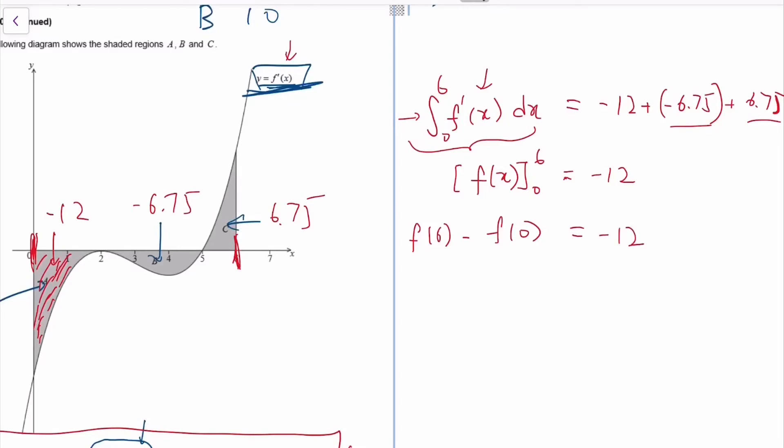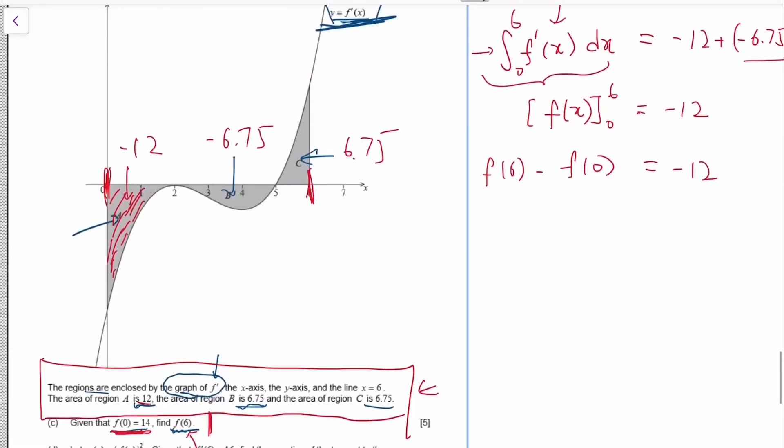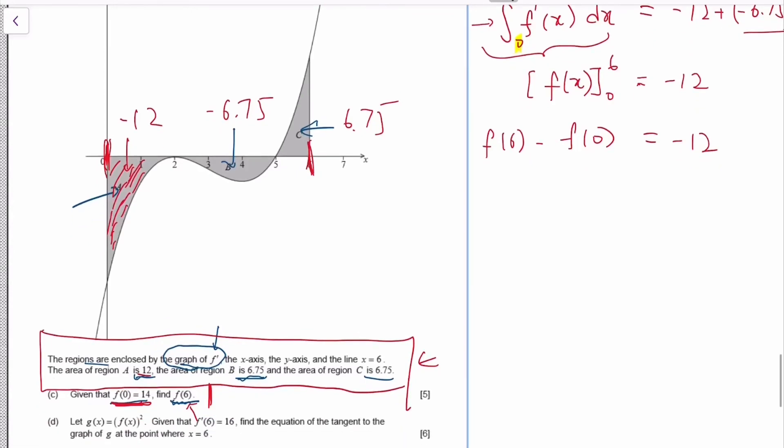What do we do with the limit? Plug in the top minus plug in the bottom. Now at this stage, it should be obvious why they need to tell you F(0), so we can find F(6).